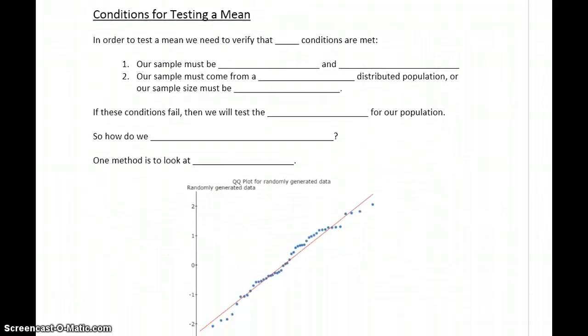In order to test the mean of a population, we need to verify that two conditions are met. Our sample must be random and independent, and our sample must come from a normally distributed population, or we need to have a sample size that's 25 or larger.